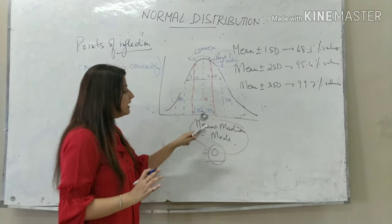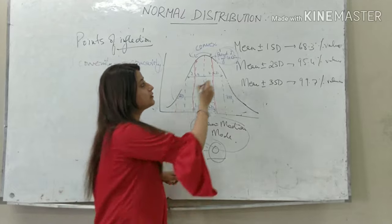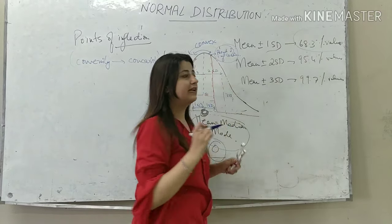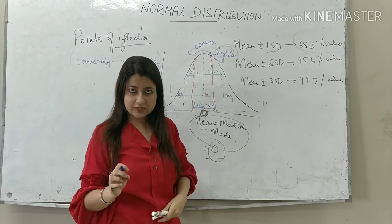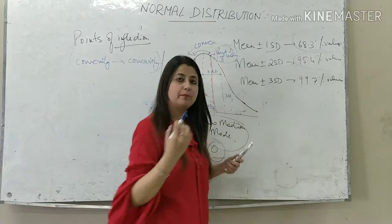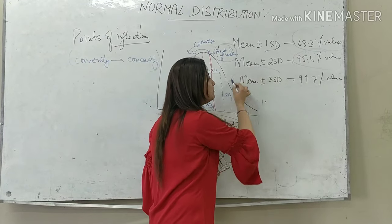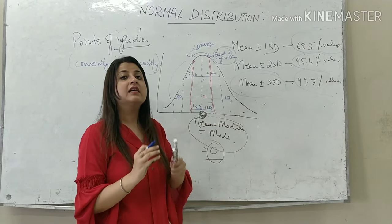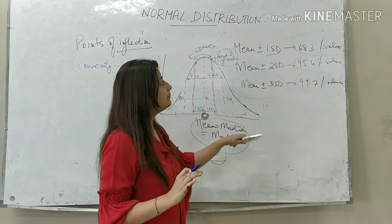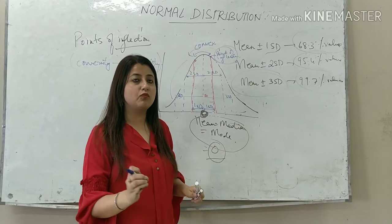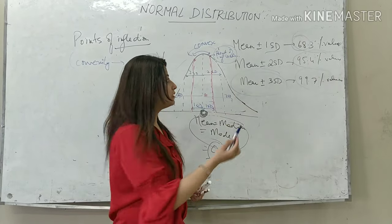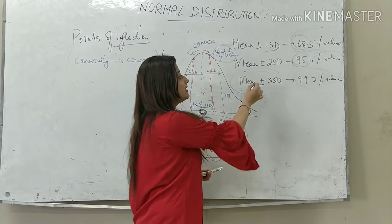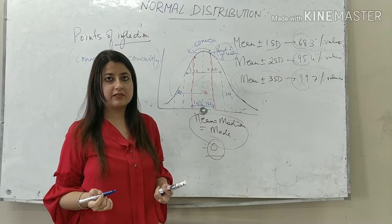Mean ± 1 standard deviation covers 68.3% of values. Mean ± 2 standard deviations covers 95.4% of values. And mean ± 3 standard deviations covers 99.7% of values. You can simply remember: ±1 SD = 68%, ±2 SD = 95%, ±3 SD = 99%.